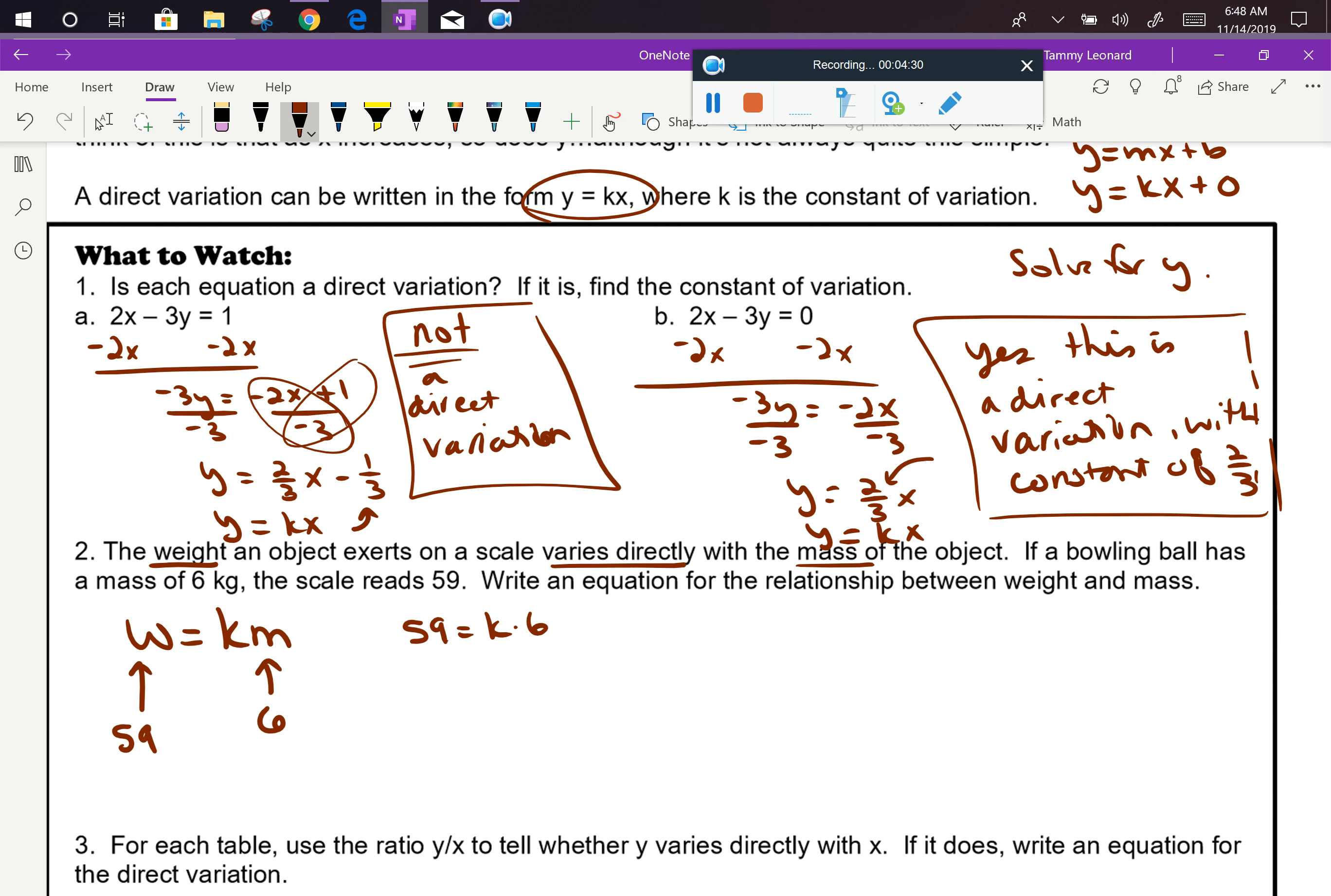Using those two numbers, we can write 59 equals k times 6. When we look at that, we realize k is now the only variable. If we divide both sides by 6, k is equal to 59 sixths, which is sort of a strange constant of variation, but it can be a fraction just like slopes can be fractions.